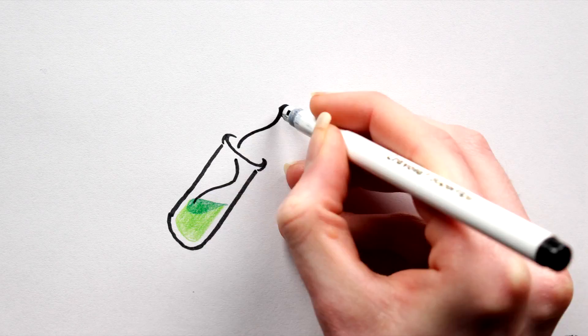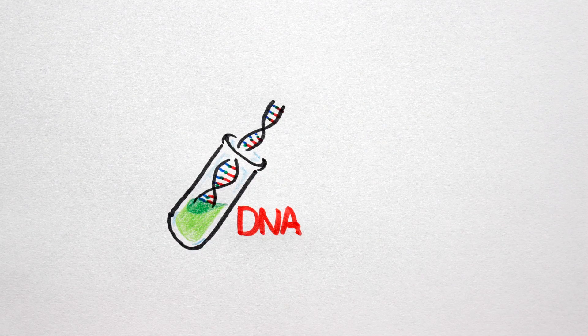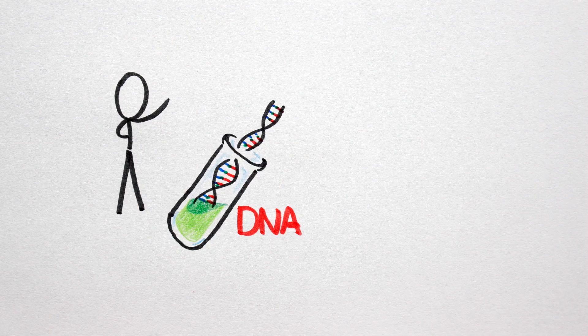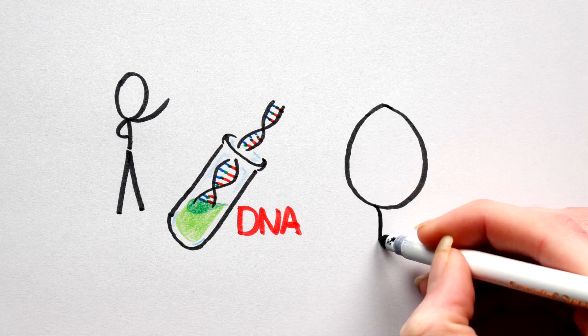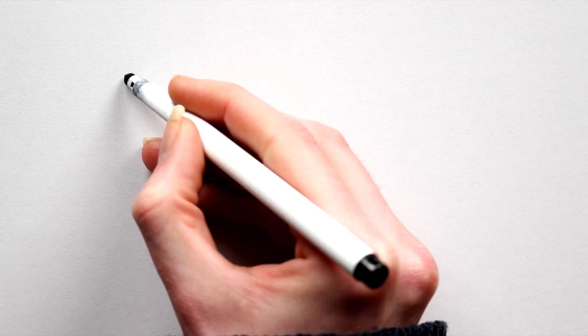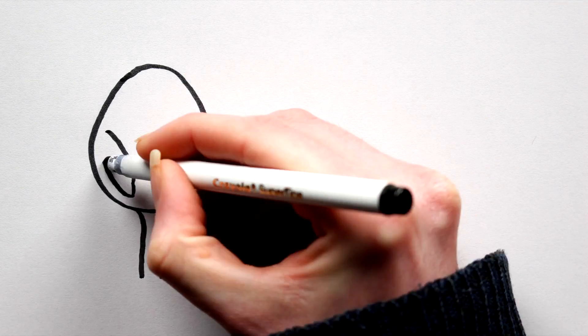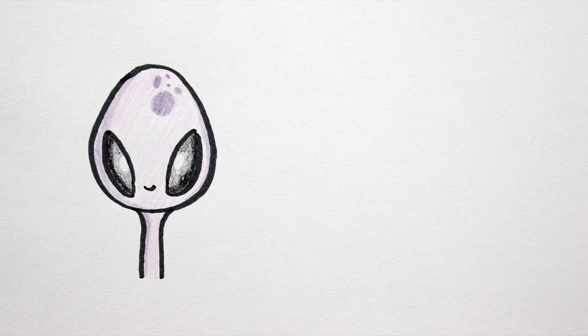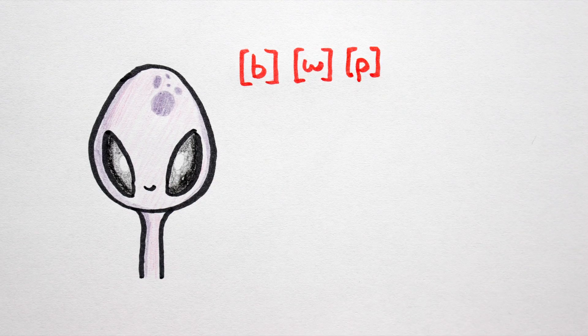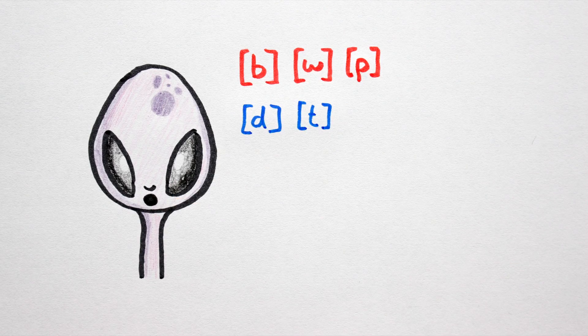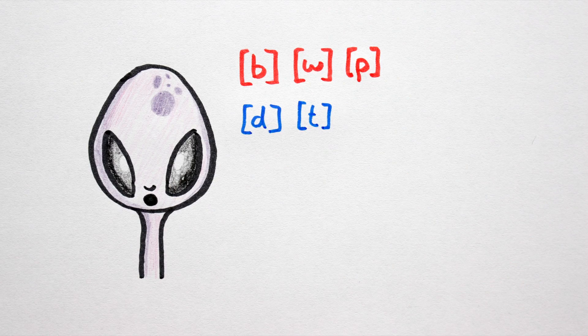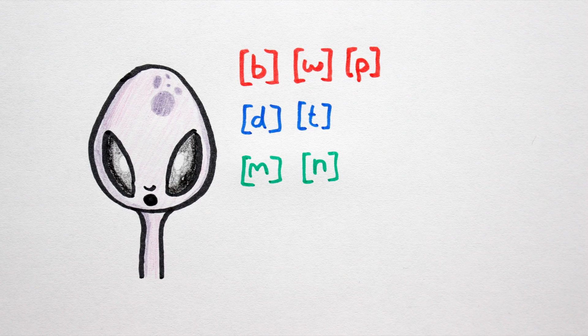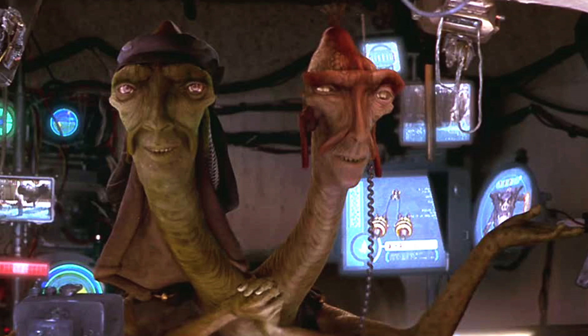Another factor determining what sounds your phonemic inventory can contain is biology. If your speaker is human, then this isn't a huge concern. Things change when it comes to aliens though. Perhaps your language would be spoken by an alien race that have no lips, so can't produce sounds like /b/, /w/ or /p/. Or no teeth, so sounds like /d/ or /t/ are out. Or maybe they can't produce nasal sounds because they lack a nose.